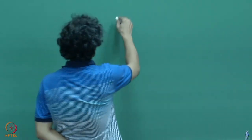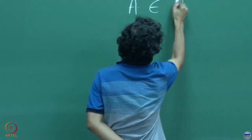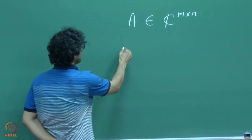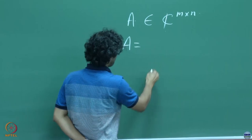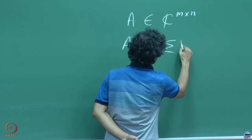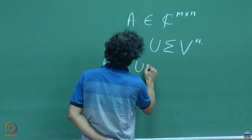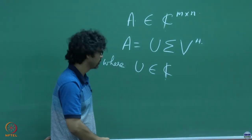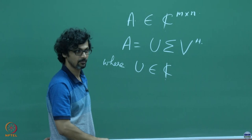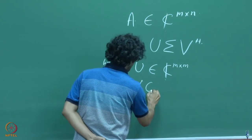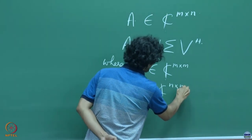We have already seen this beautiful factorization of any arbitrary m×n complex matrix called the SVD. Suppose you have a matrix like so; we can always write this matrix in a certain form where U is of size m×m, V is also of size n×n — so these are square matrices.